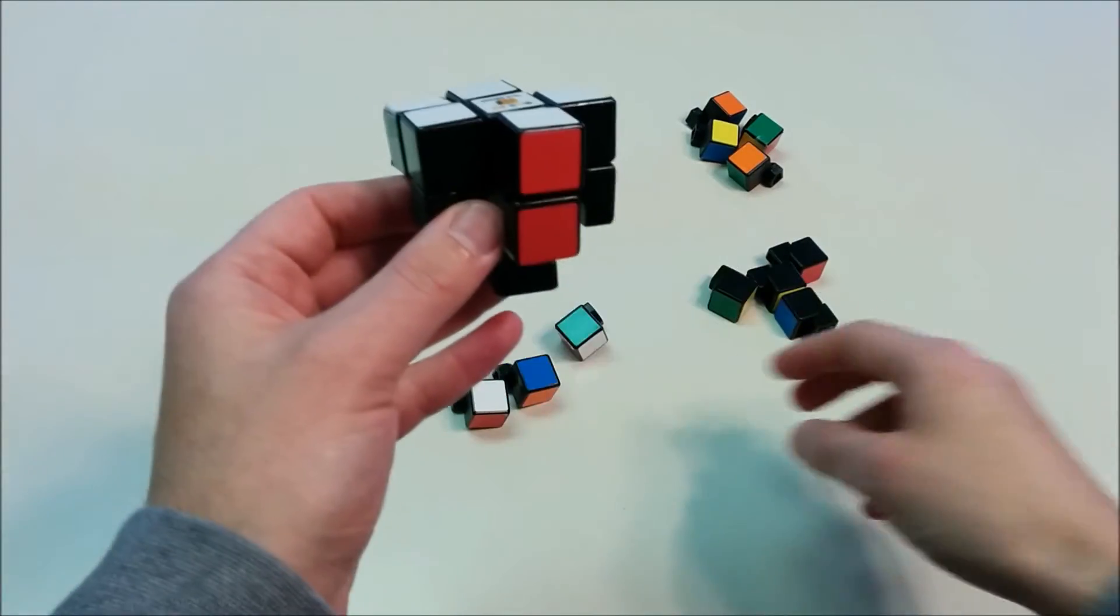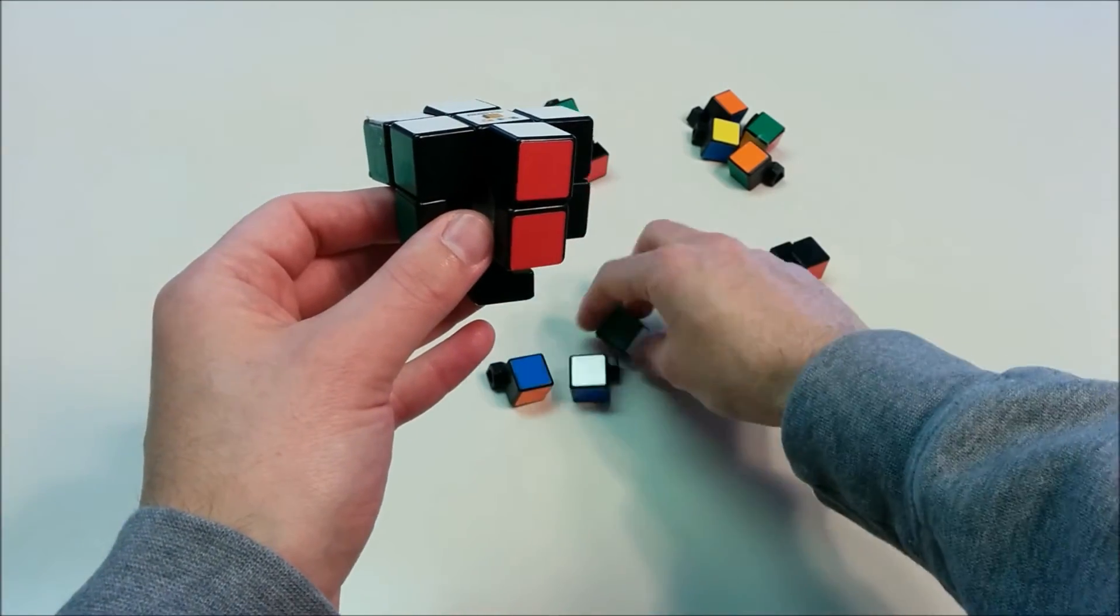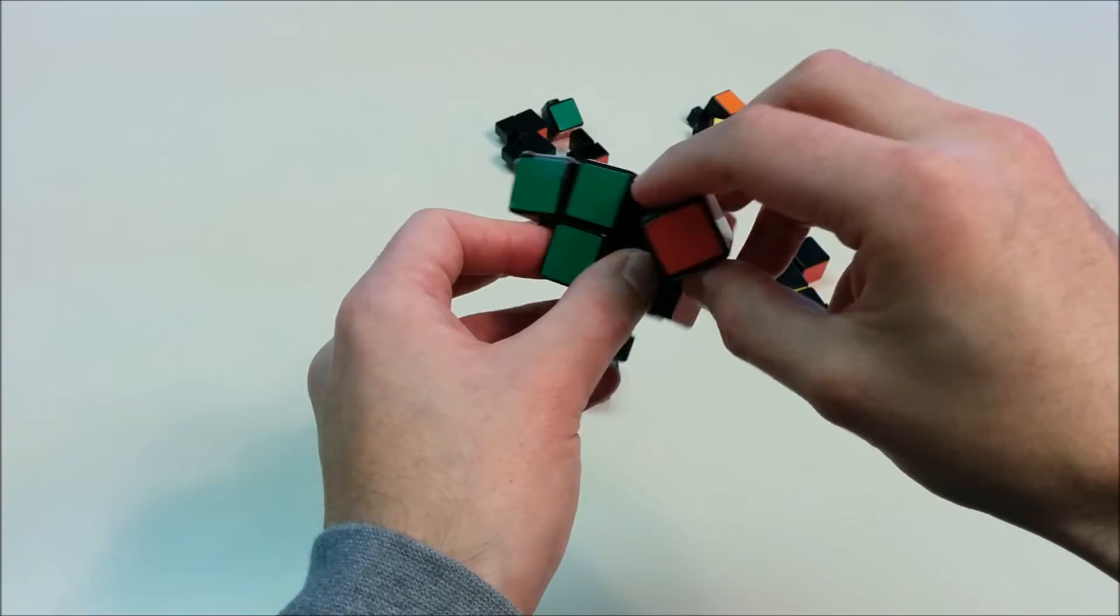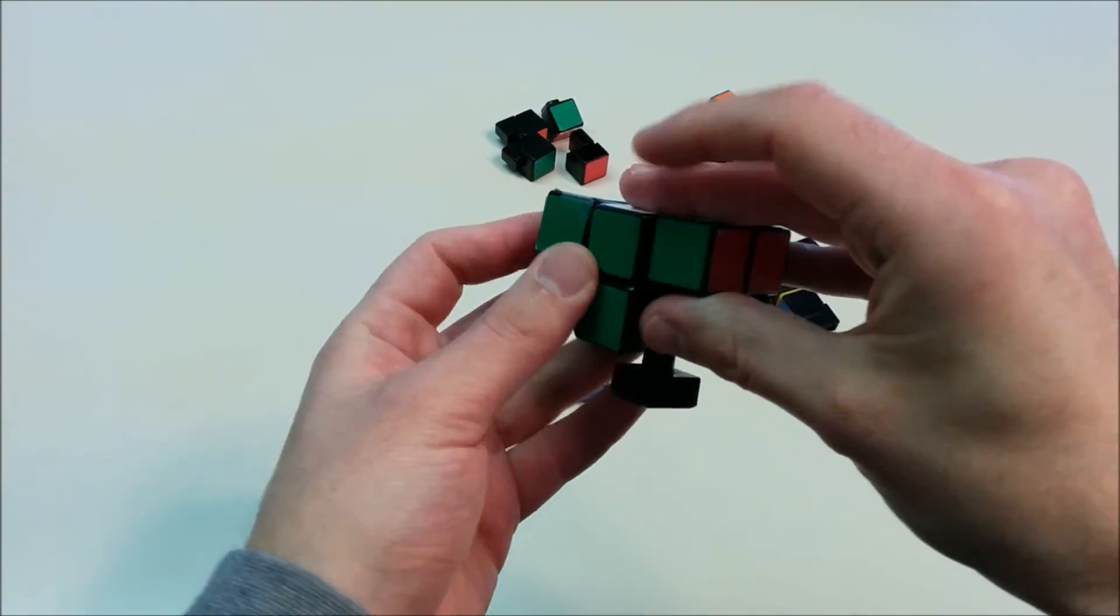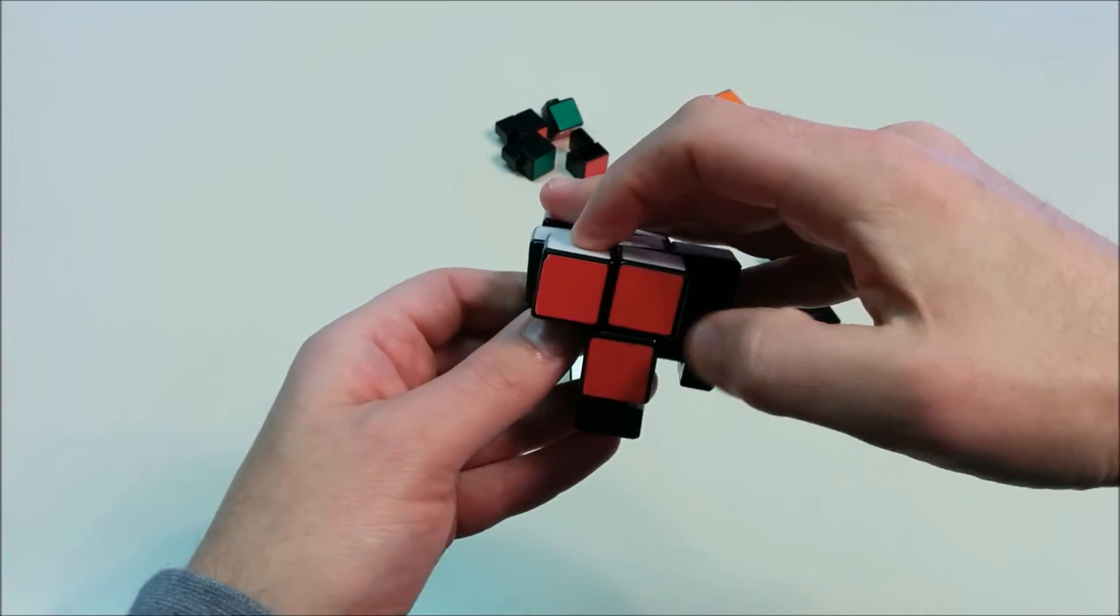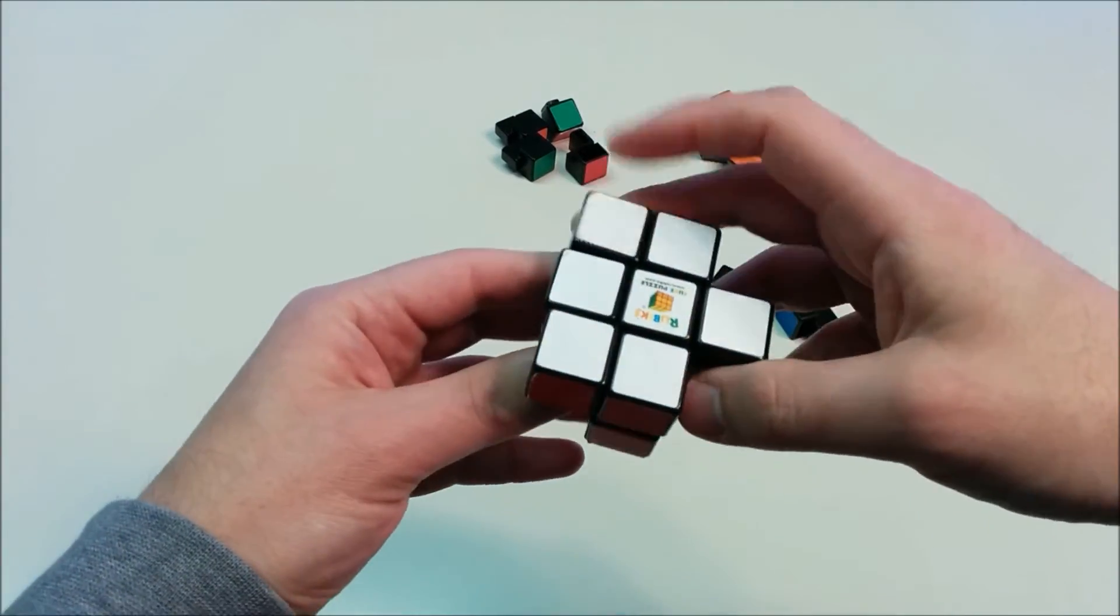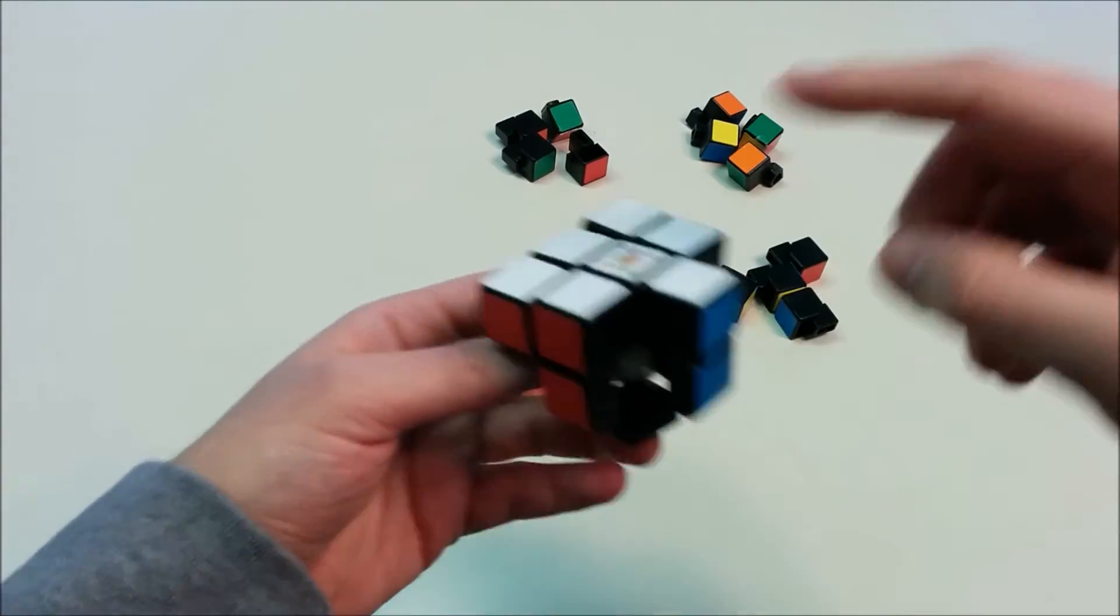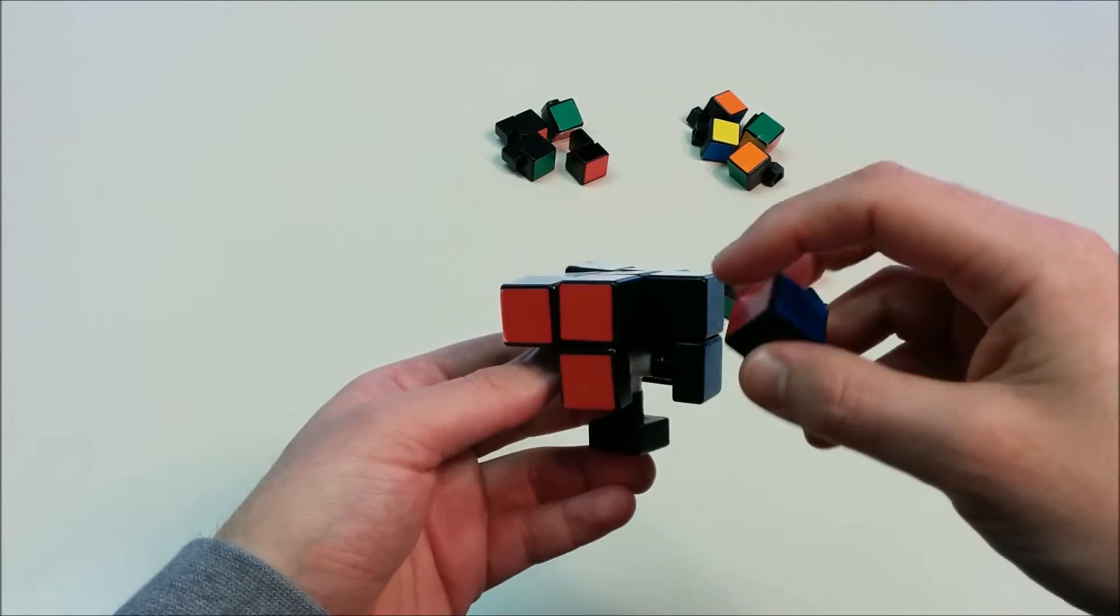Then we have a corner which is green, red, and white. We find that corner, and put it in the correct orientation as well. As you can see, while I'm putting the cube back together, there are some difficulties. So that's another problem with this method of cheating.